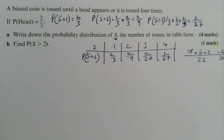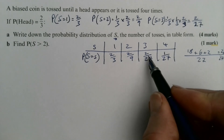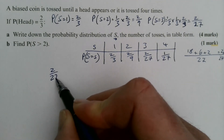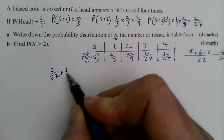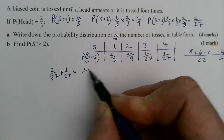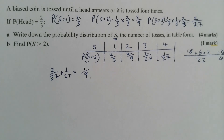Finally, P(S > 2) means S = 3 or S = 4, so 2/27 + 1/27 = 3/27 = 1/9. That's the end of this topic — until next time!